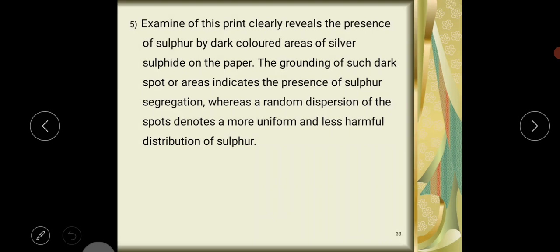Examination of this print reveals the presence of sulfur by dark colored areas of silver sulfide on the paper. The grouping of such dark spots or areas indicates the presence of sulfur segregation, whereas a random dispersion of the spots denotes a more uniform and less harmful distribution of sulfur.